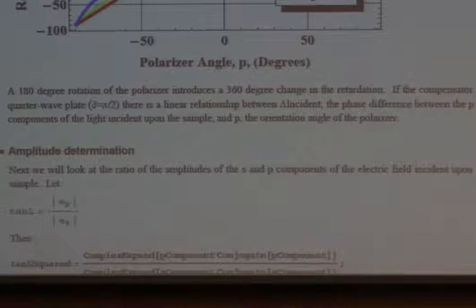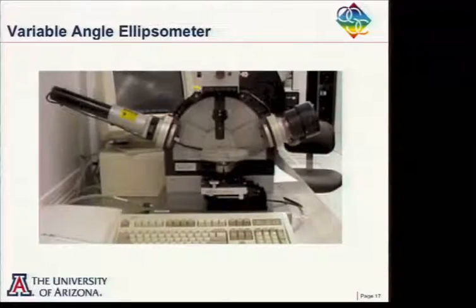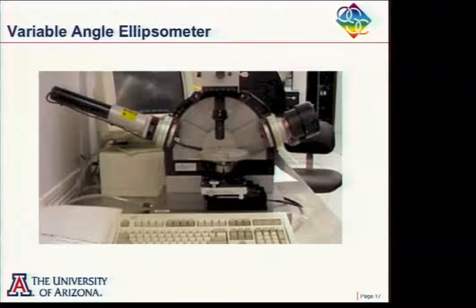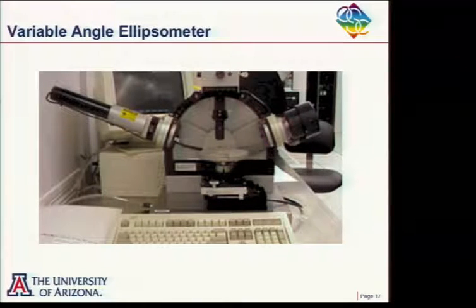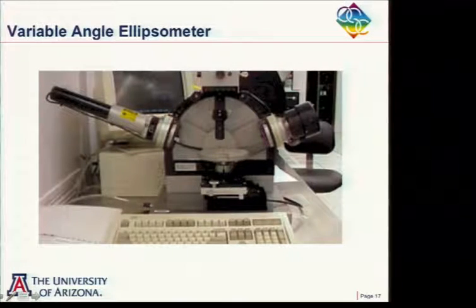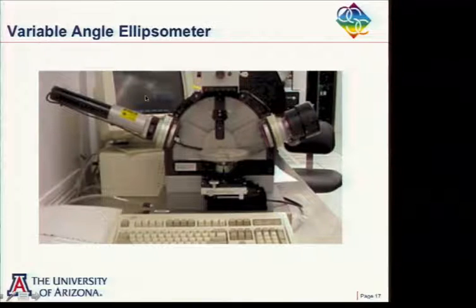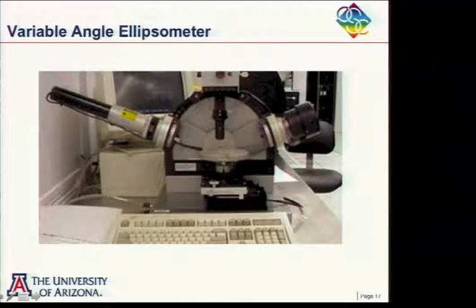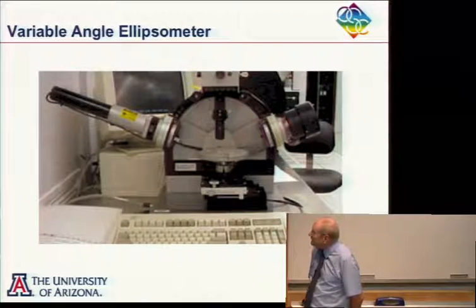Looking at pictures of ellipsometers, you always illuminate the sample at a large angle of incidence, typically around 60 degrees, and view at a similar angle. You have a polarizer on one side and an analyzer on the other that you rotate. Some ellipsometers vary the wavelength, doing measurements at many wavelengths especially for complex thin films, and others also vary the angle of incidence and reflection to gather more data.